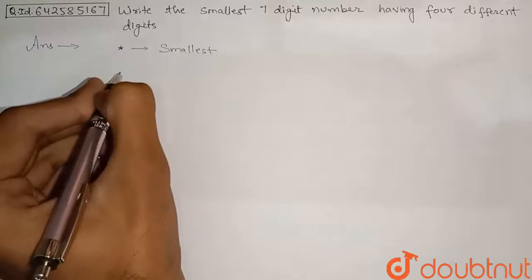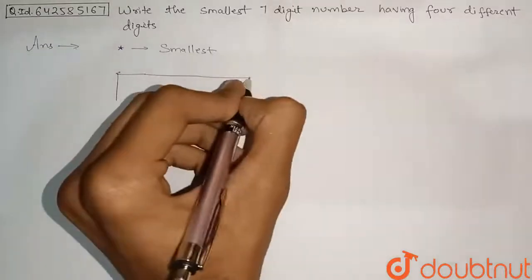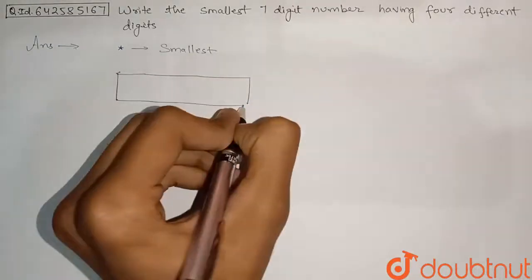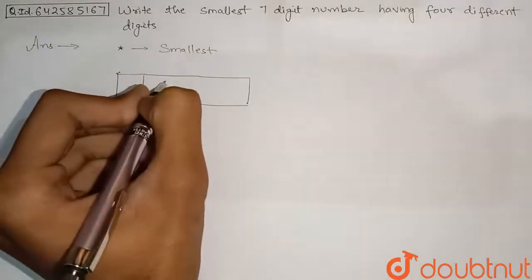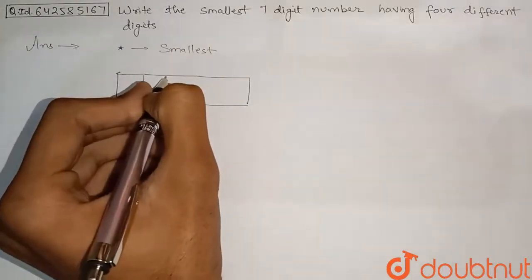So here we can just make 7 blocks, that is 7 blocks for the 7 digits of this number. And total 4 digits are there and we have to just repeat all these digits and we can form the number.